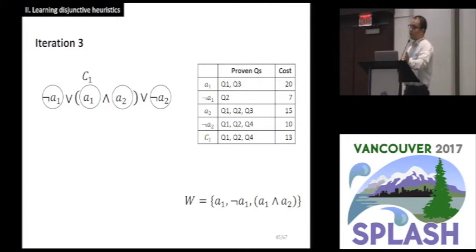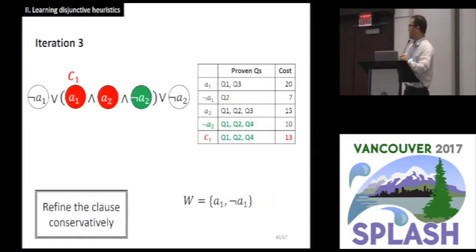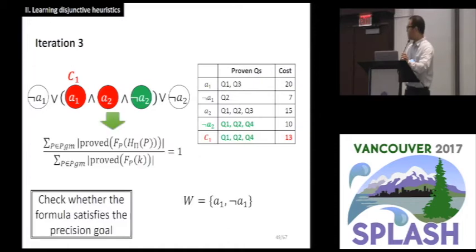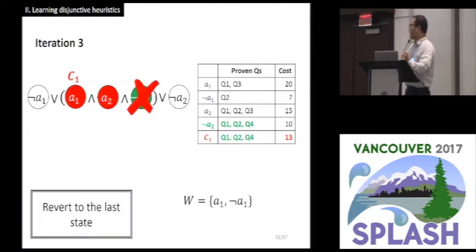Let's see another iteration for the opposite scenario. I will skip some redundant details from now on. We pick the most expensive clause and remove it from the work set. And we refine the clause conservatively. In this case, this implies false. Check whether the formula satisfies the precision goal. Then the refinement failed to prove all queries. We missed query Q3. In this case, we roll back to the last state. This is the end of the third iteration.